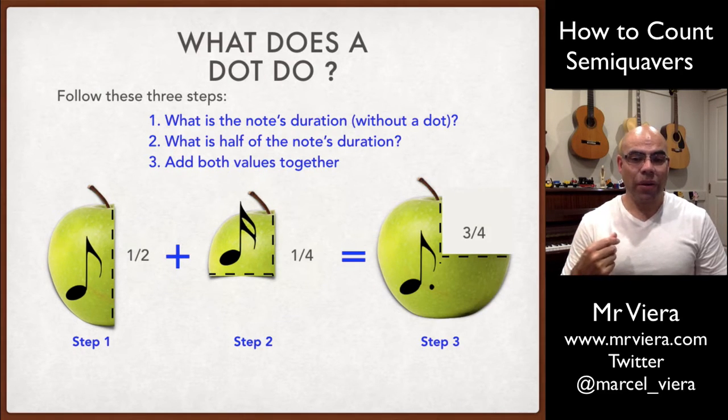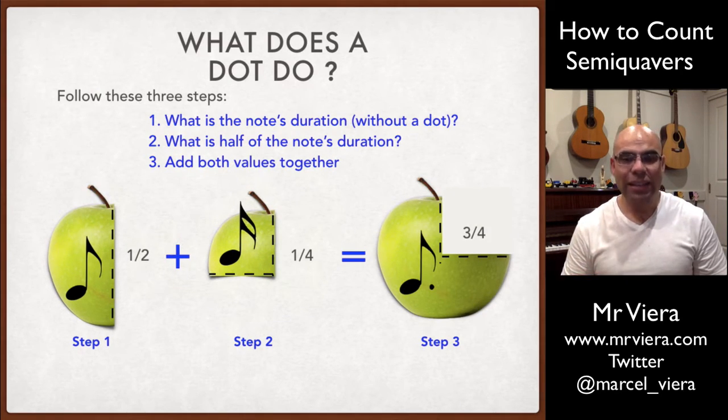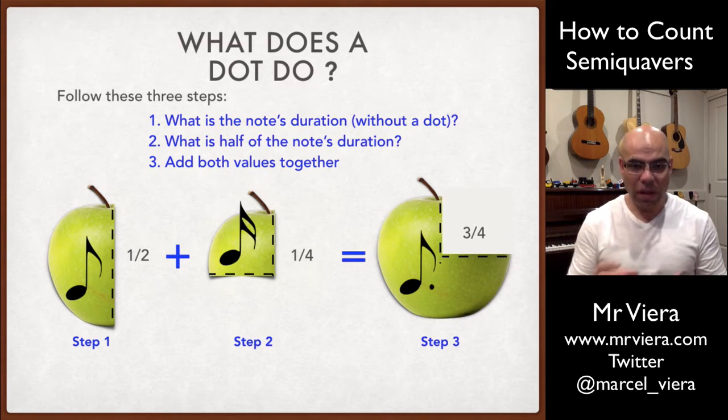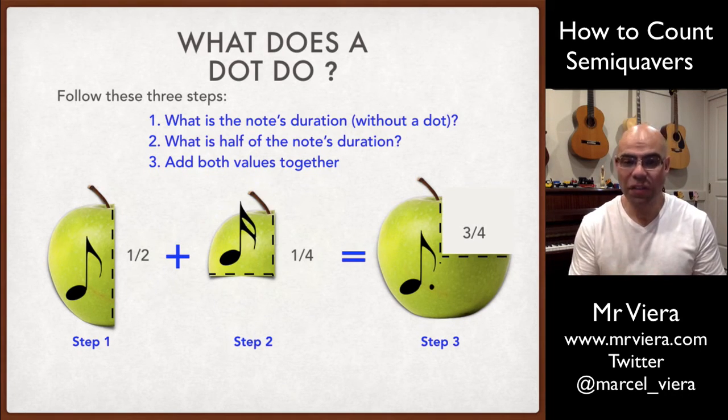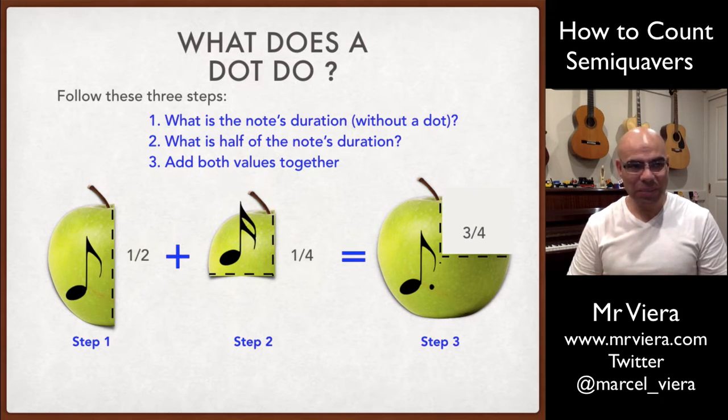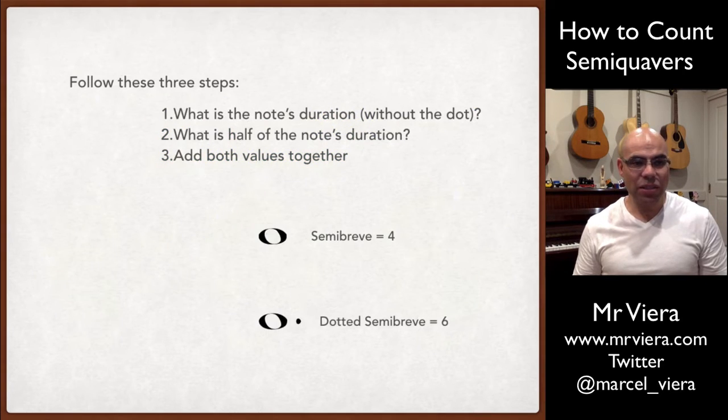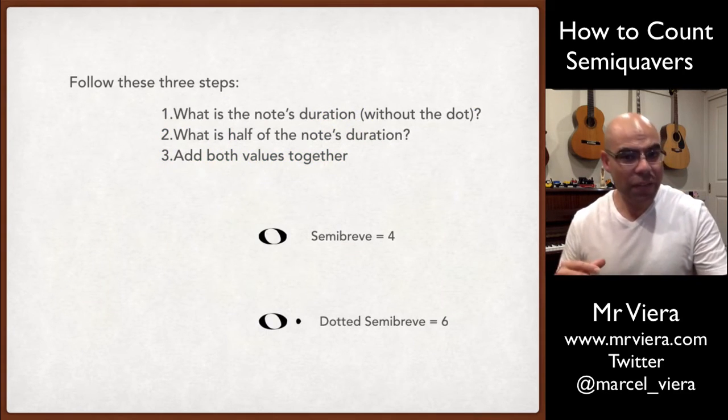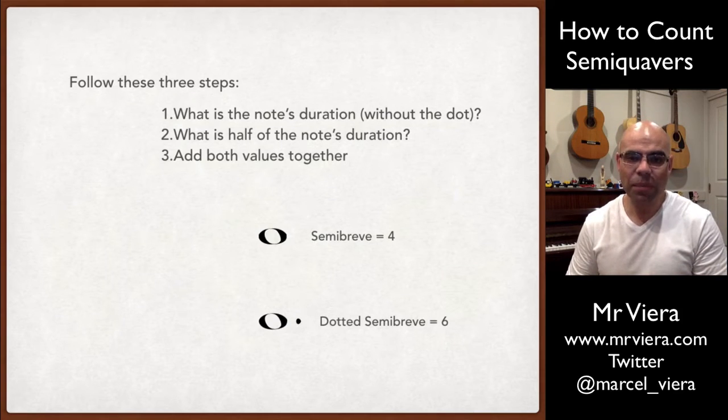So our dotted quaver is actually a combination of a whole quaver plus half of its value or a quarter and a half plus a quarter equals three quarters. And that's what a dot does. We can actually apply this to some other rhythmic values. So these aren't very common, but you do see them every now and then.